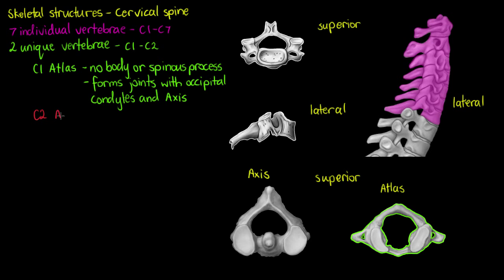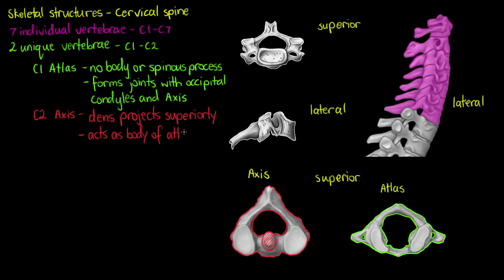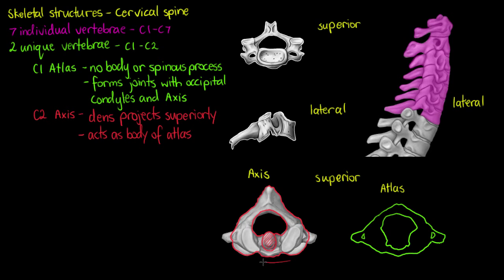The axis, our C2, does have a spinous process at the back and also a body. On the superior side of the body we have an object called the Dens. The Dens is a large projection that projects superiorly. The atlas will sit on top of that and allow us to move our head side to side. I'll place the atlas on top of the axis here, and we can see that it sits perfectly on top and is going to allow us to shake our head in a 'no' motion.